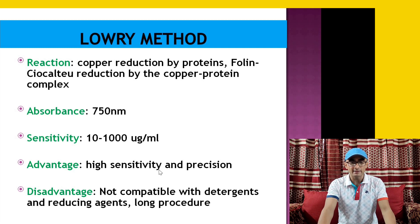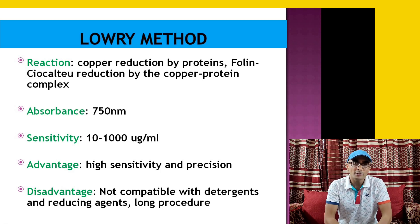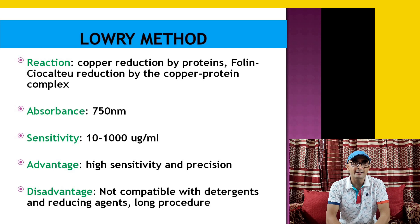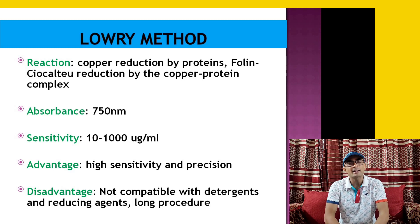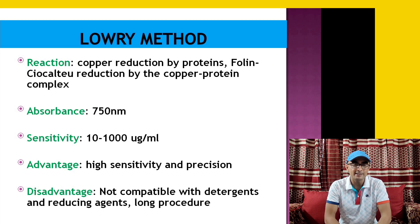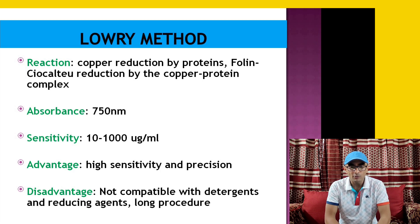The advantage of this method is its high sensitivity and precision — the values obtained are very accurate. The disadvantage is that it is not compatible with detergents and reducing agents. If the sample contains a detergent like SDS, or a reducing agent like beta-mercaptoethanol, this method does not give accurate results. Similarly, a metal chelating agent like EDTA also negatively affects accuracy. Moreover, it takes much longer time — generally around one hour — to calculate protein concentration.